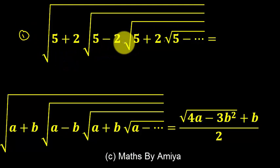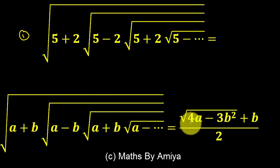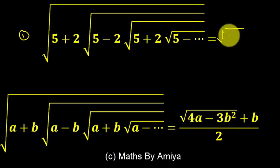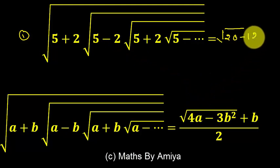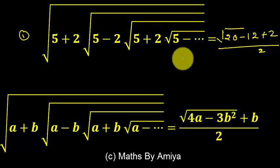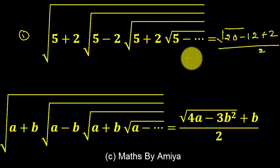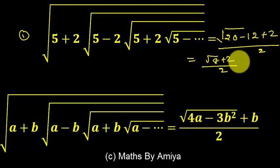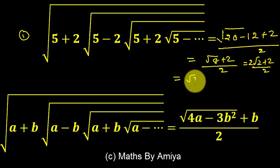Now solve question number one: a = 5, b = 2, with pattern plus, minus, plus, minus. The formula for alternate signs starting with plus is under root of (4a minus 3b)² plus b, divided by 2. This becomes under root of (4×5 = 20 minus 3×2 = 12) squared plus 2, divided by 2 — that is under root of 8 plus 2, divided by 2, which is (2 root 2 plus 2) divided by 2. The final answer is root 2 plus 1.